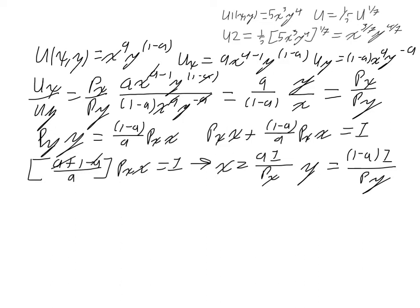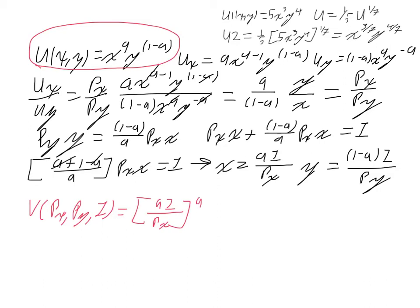If we take these two expressions and substitute them back into the original utility function, we get the indirect utility function - a function of Px, Py, and I - equal to (aI/Px)^a times [(1-a)I/Py]^(1-a).